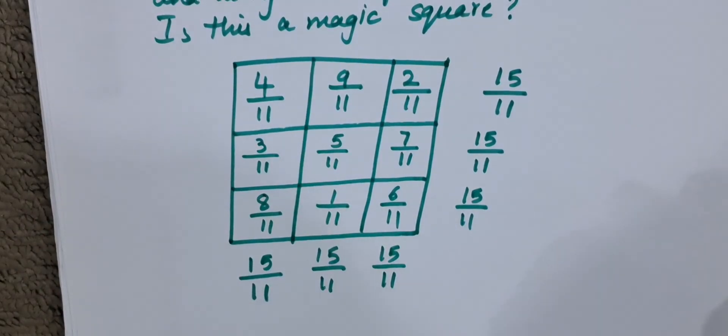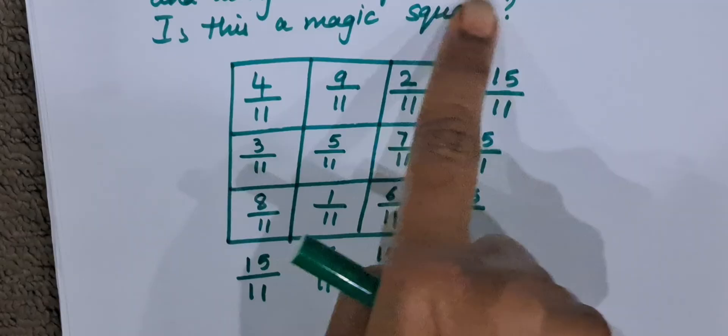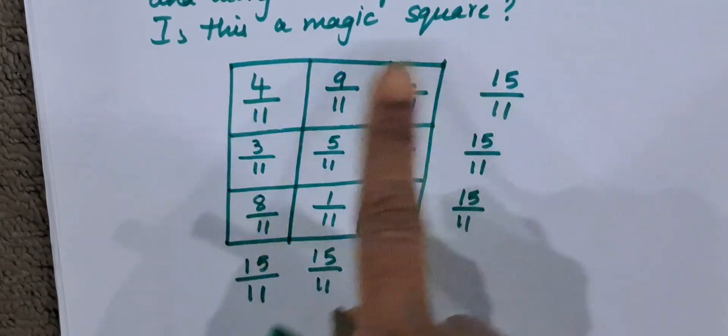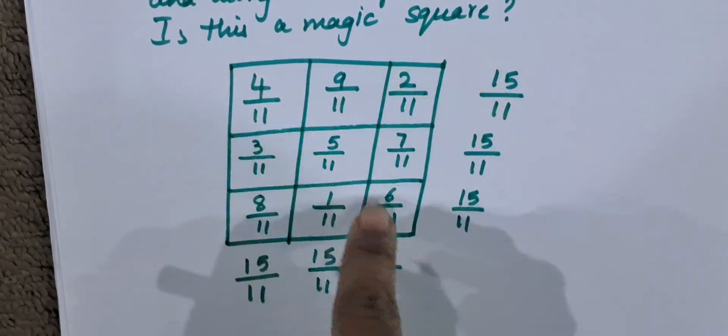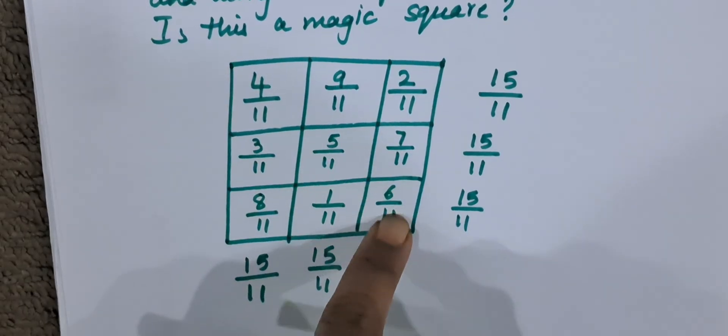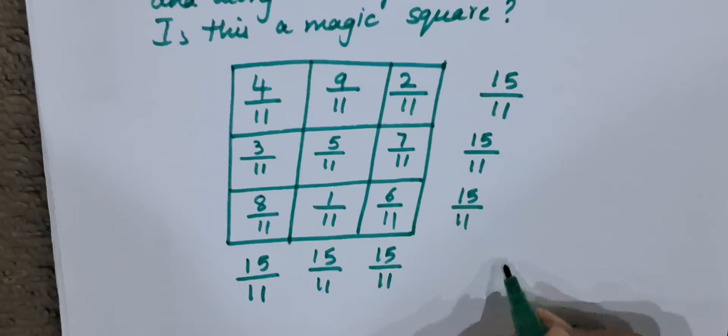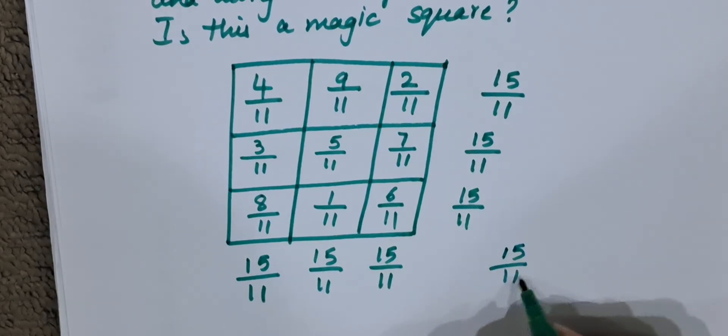Now we have to check the diagonals. They have also told along the diagonals is the same. Is it the same? We will check the first diagonal here. 4 by 11, 5 by 11, and 6 by 11. 4 plus 5 is 9, 9 plus 6 is 15 by 11. First diagonal.